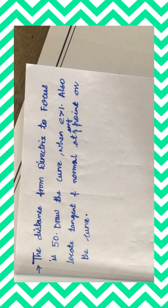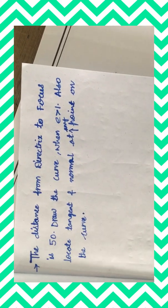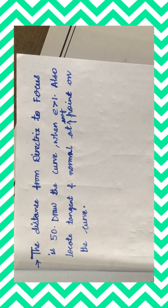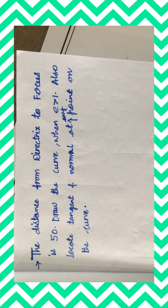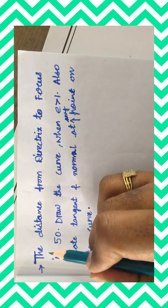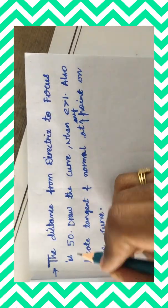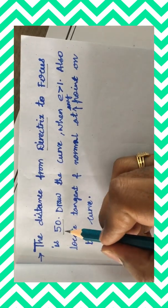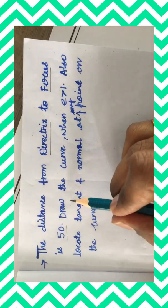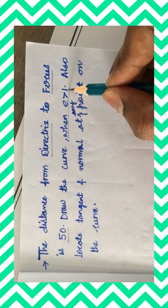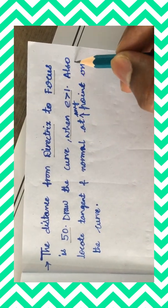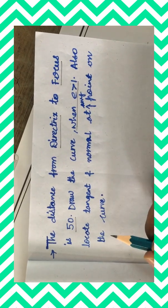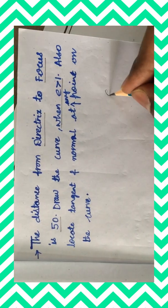Hello students. I hope you have done the construction of parabola. In today's lecture we will be seeing one more question. Please look at the question and understand which type of curve it belongs to. The distance from the directrix to the focus is 50. It is also asked to draw the curve when e is greater than 1. Also locate the tangent and normal at any point on the curve. It is given that e is greater than 1.